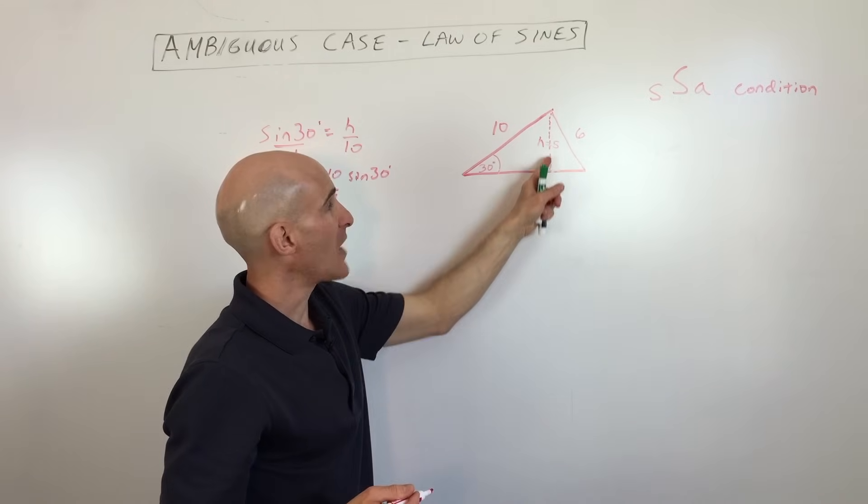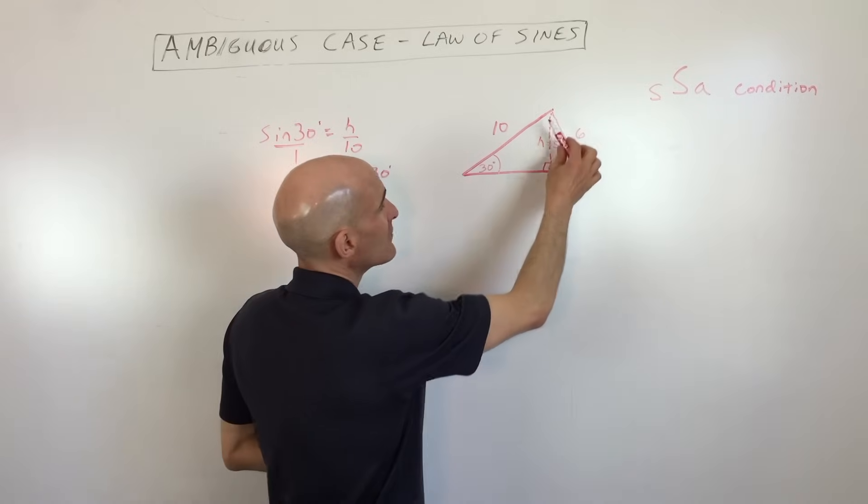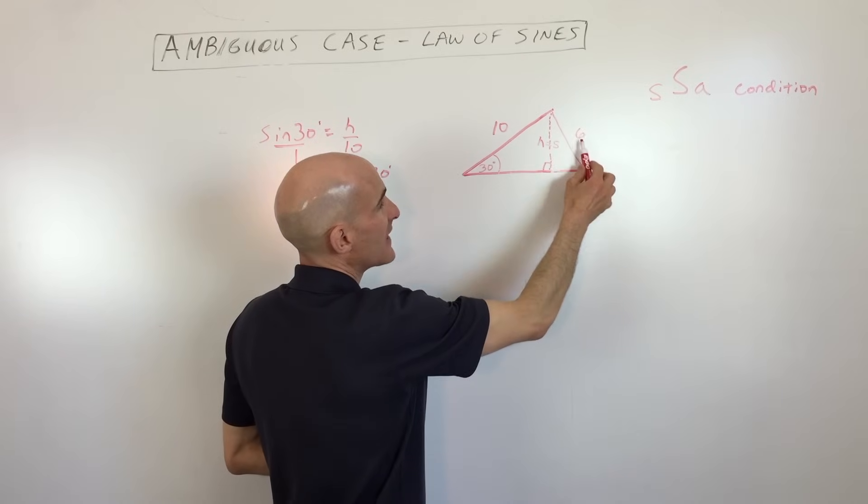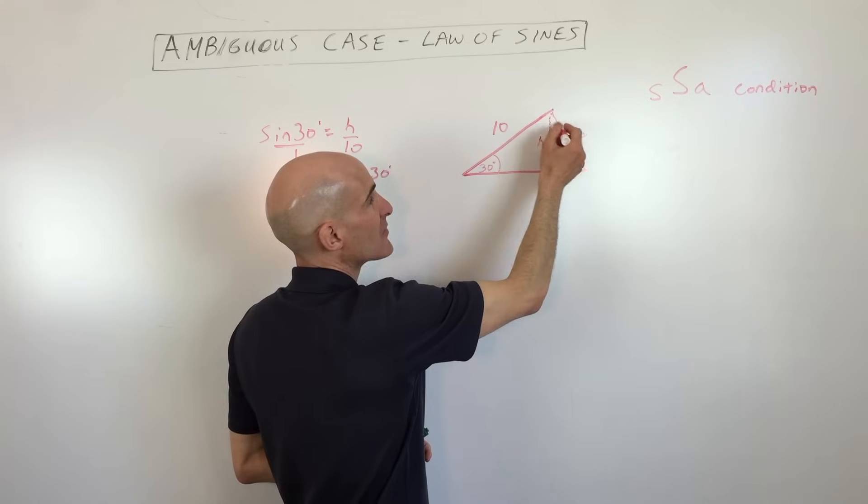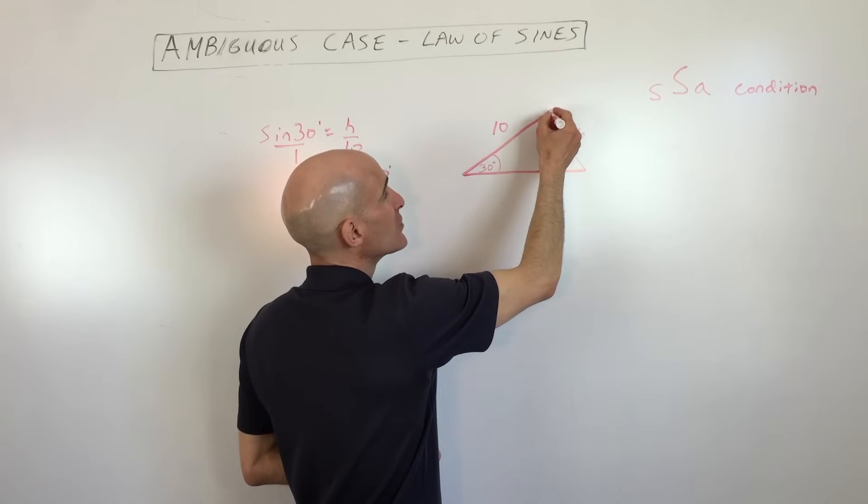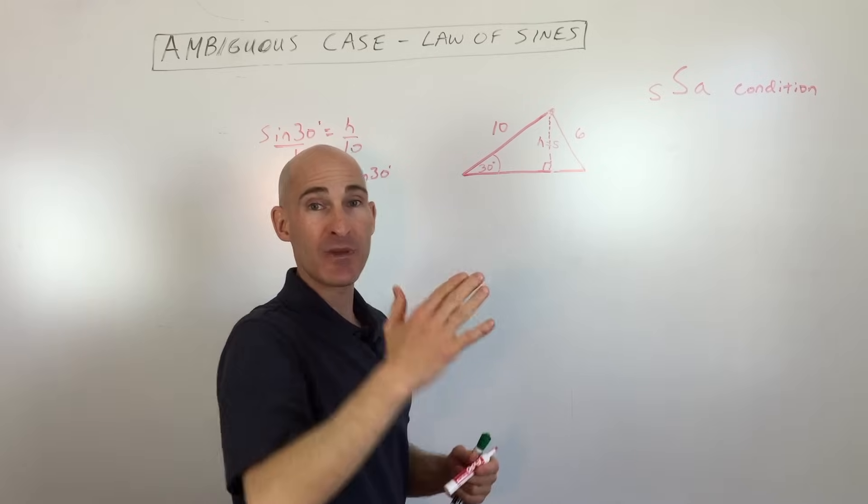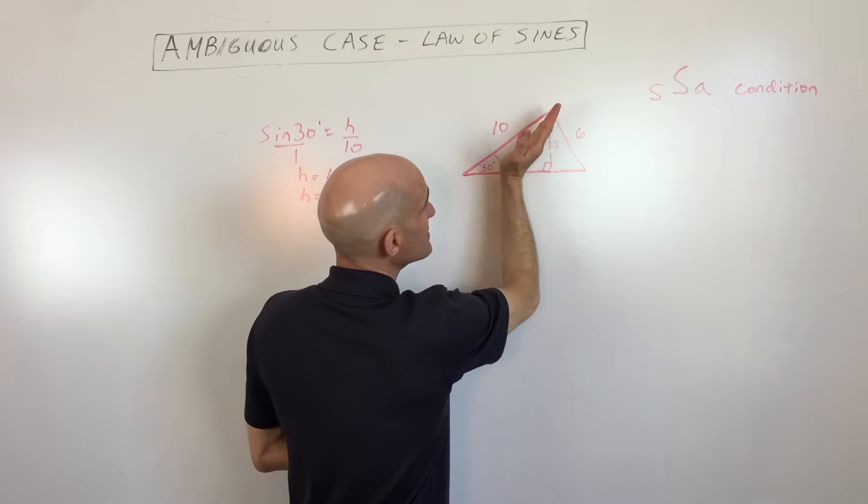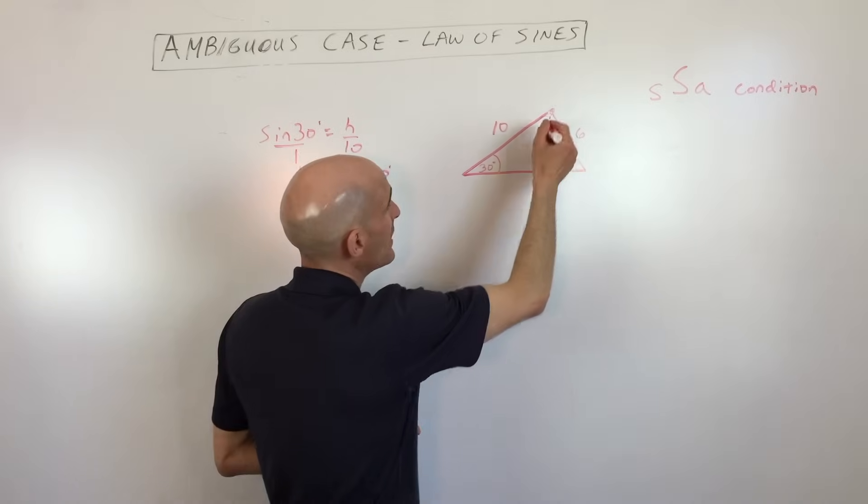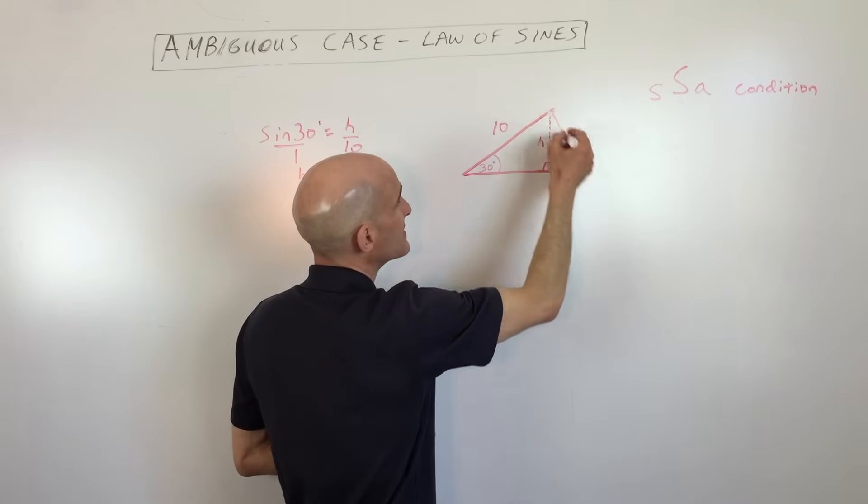And so what we're doing is we're dropping a perpendicular, but what you want to do is you want to look at the side here, the side six, and you want to realize that they didn't tell us anything about this angle up here at the top. So you could think of this as being on a pivot or on a hinge, and it's very possible that we could rotate this, in such a way that you could actually draw the side six like this.